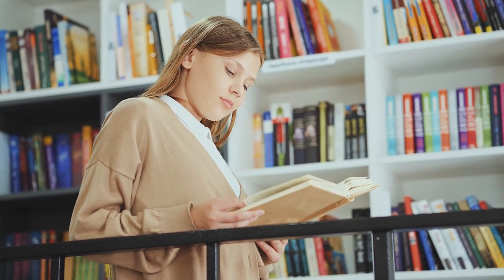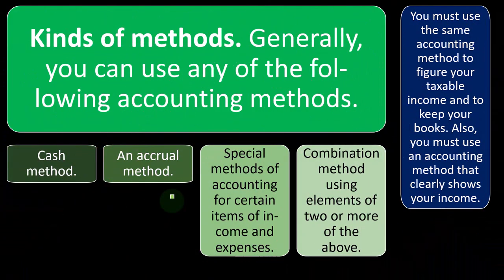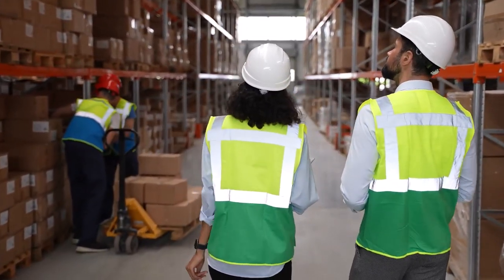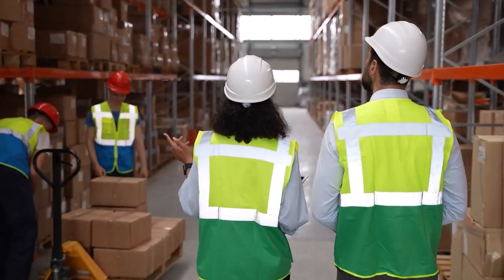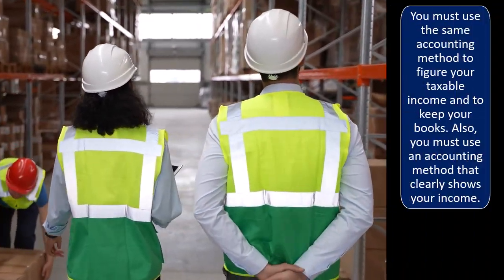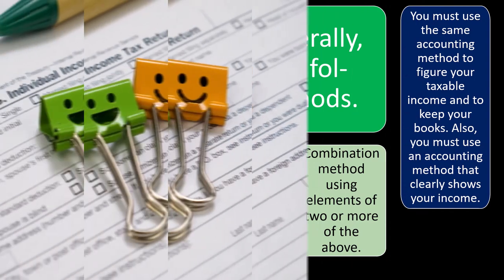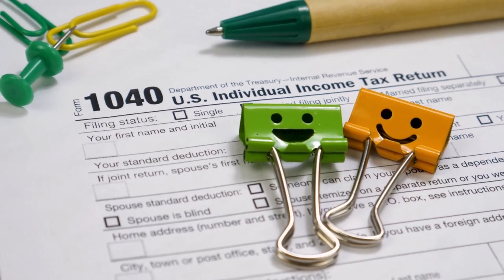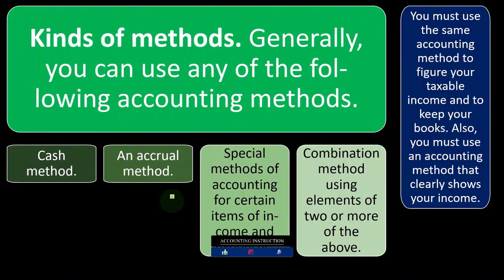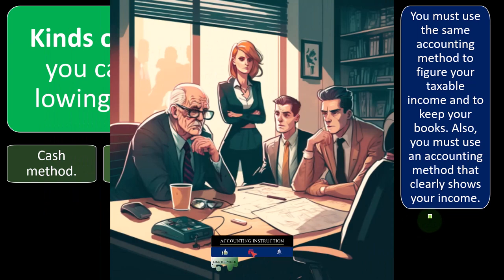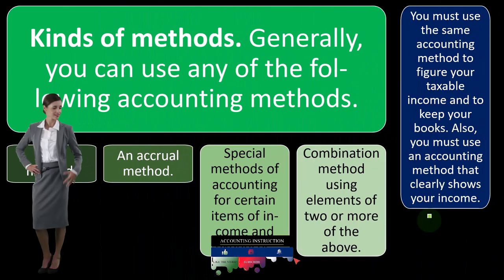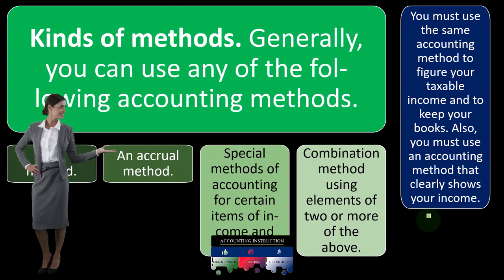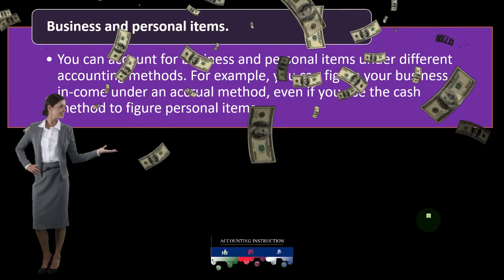The IRS says that whatever method you use to keep your books should be primarily the same method you use to do your taxes. The IRS would have to audit you to know what method you use for your books, but in principle, if you're using one accounting method on your books and totally changing it for taxes — from accrual to cash or otherwise — it looks like you're doing that to avoid taxes. That's why the IRS wants you to use the same method. You must also use an accounting method that clearly shows your income; if your method is not accurately showing income, that's not acceptable.